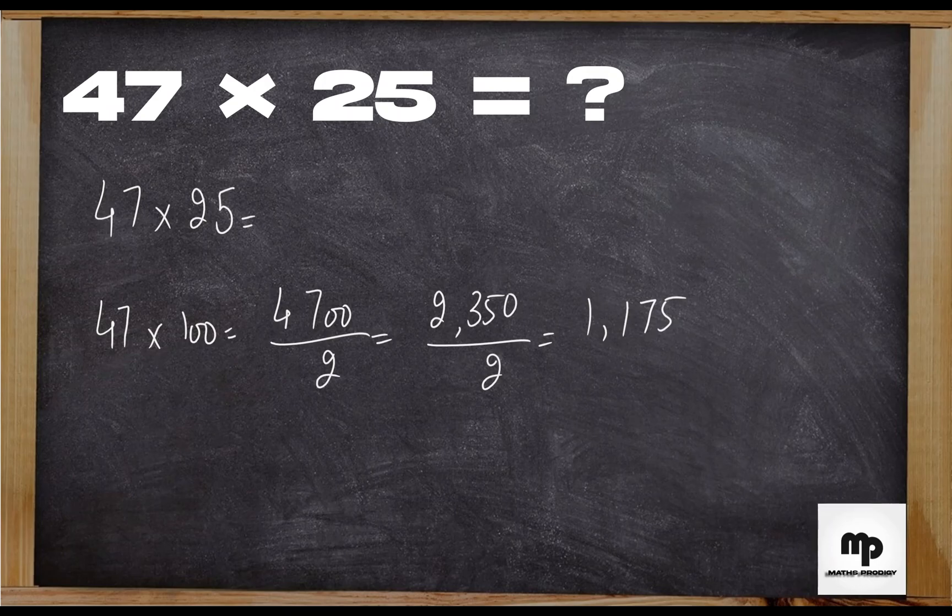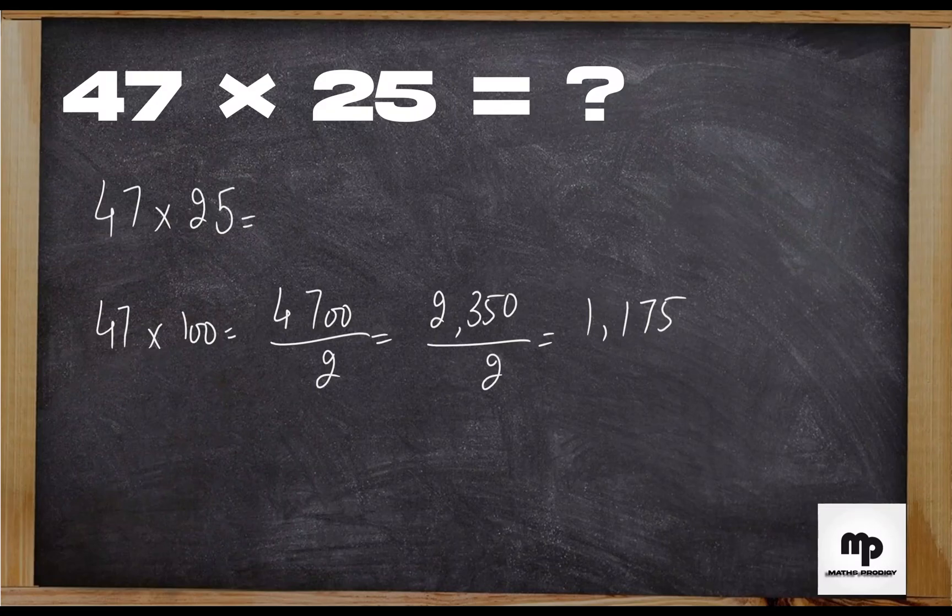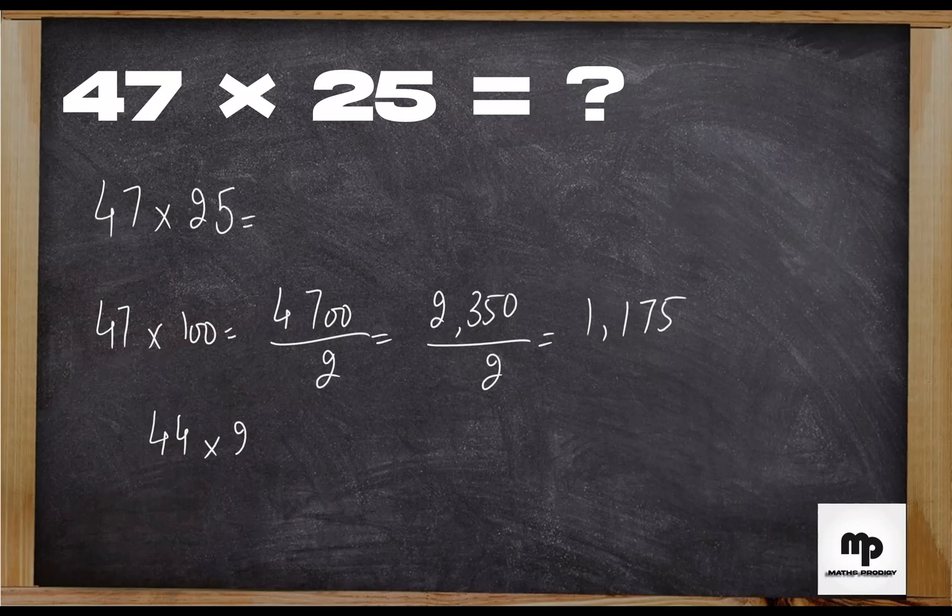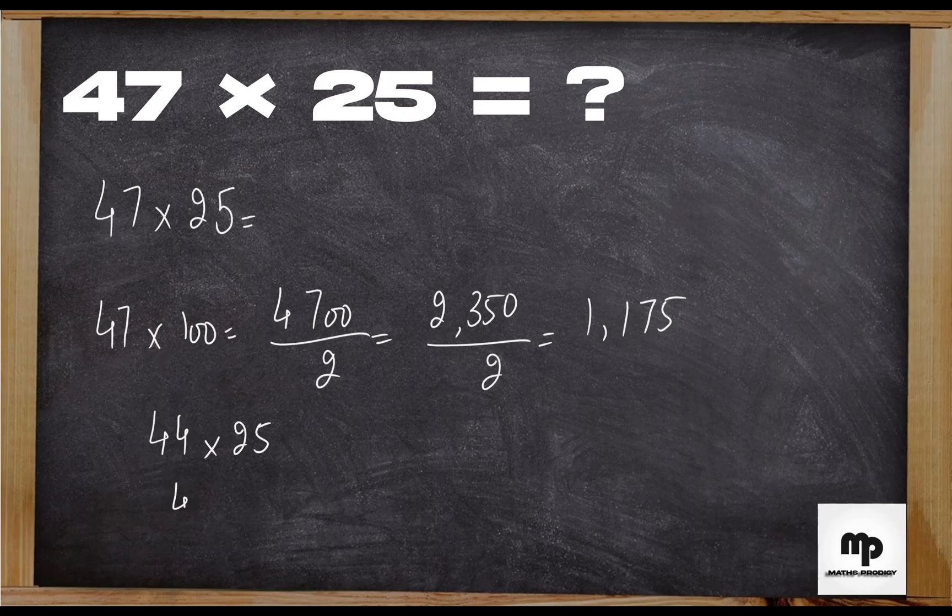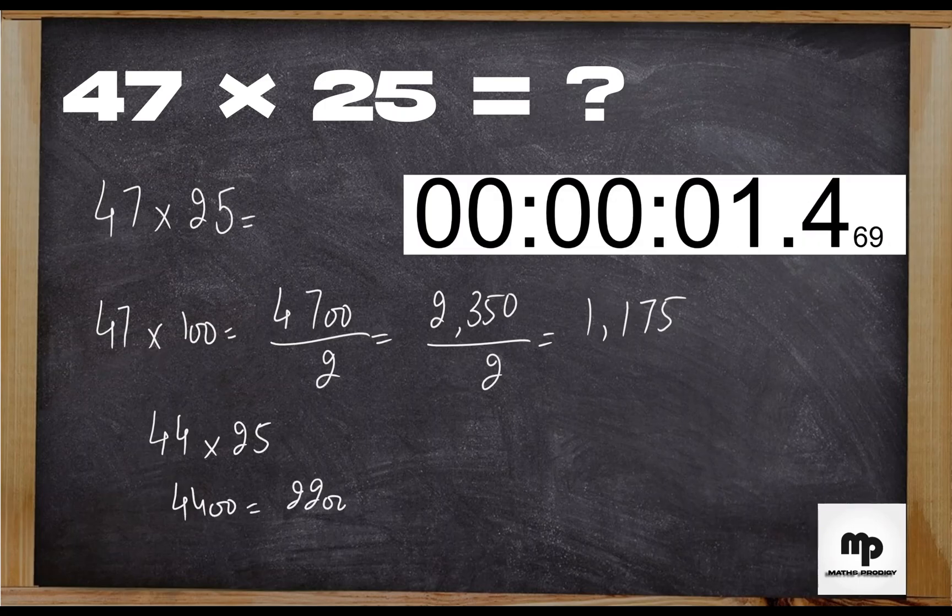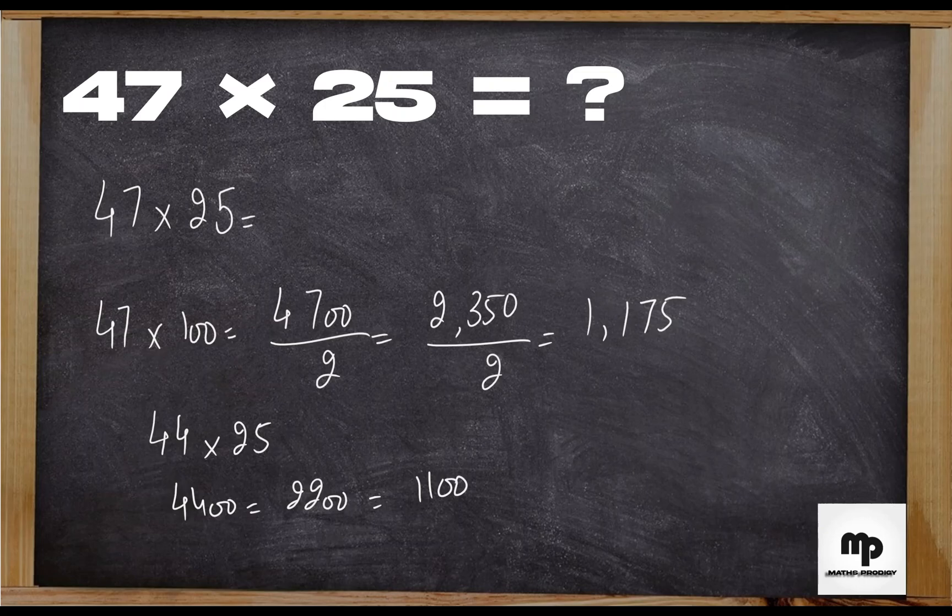So let's start the timer. Now we will take an example of 44 by 25. The answer is 4,400, then 2,200, and 1,100. That's it! You can see we did this question in just a few seconds.